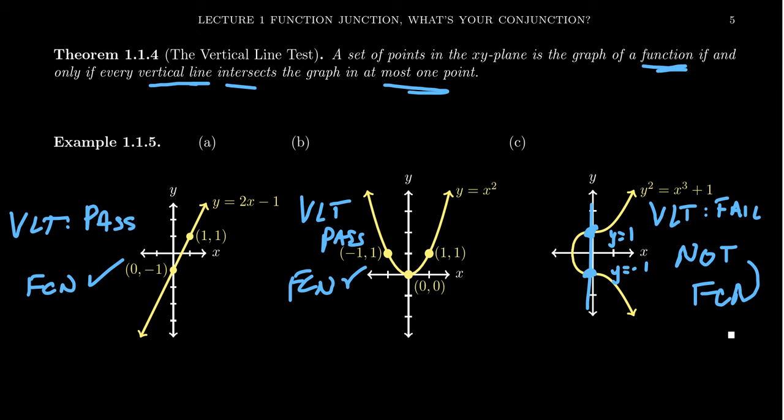Determining whether a graph is a function or not is as simple as running this vertical line test. Now I do want to make one slight disclaimer: when you look at the two graphs that were functions, the first one passes the horizontal line test, but the second one fails the horizontal line test. That has no bearing on whether it's a function or not. Heck, the elliptic curve here passes the horizontal line test.